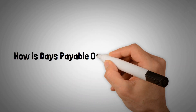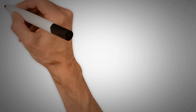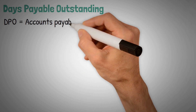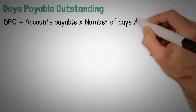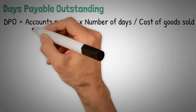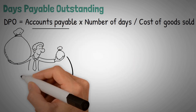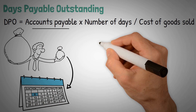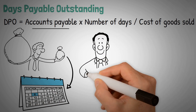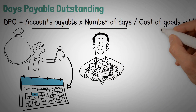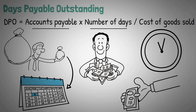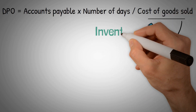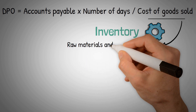How is Days Payable Outstanding calculated? The formula for calculating Days Payable Outstanding is: DPO equals accounts payable multiplied by number of days, divided by cost of goods sold. Accounts payable is the money owed to suppliers at the end of a specified period, normally a year or a quarter. Alternatively, it can be the average money owed over that period. Number of days is the period of time used in the accounts payable calculation. The cost of goods sold is the cost for producing inventory, which includes raw materials and shipping costs.